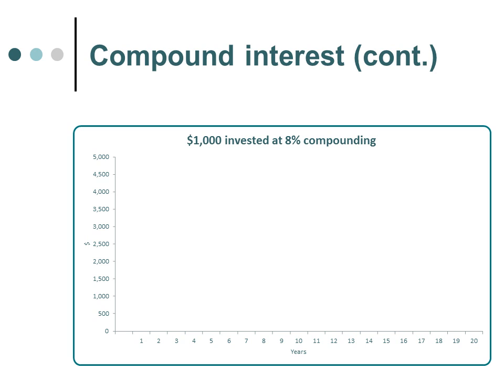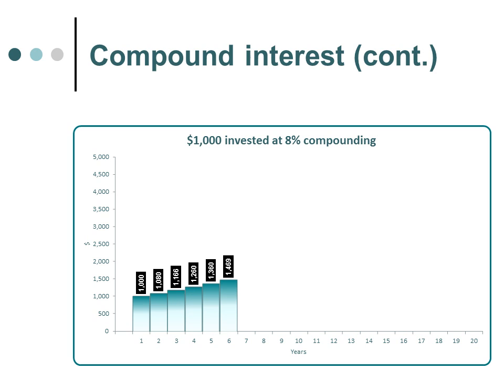If you have a term deposit of $1,000, the following diagram shows you the benefits of how compounding interest can work in your favour. Assuming that you invest this at 8% for 20 years, you can see the original $1,000 has actually grown to $4,316 over this period of time.